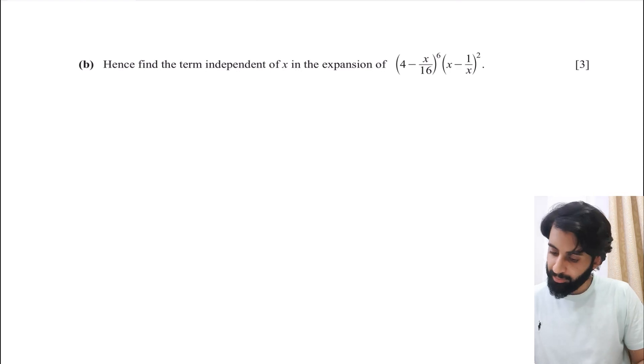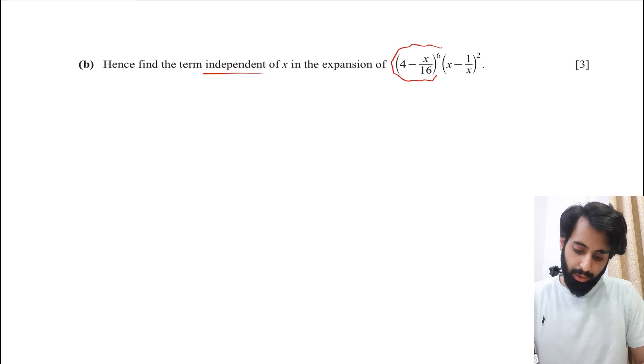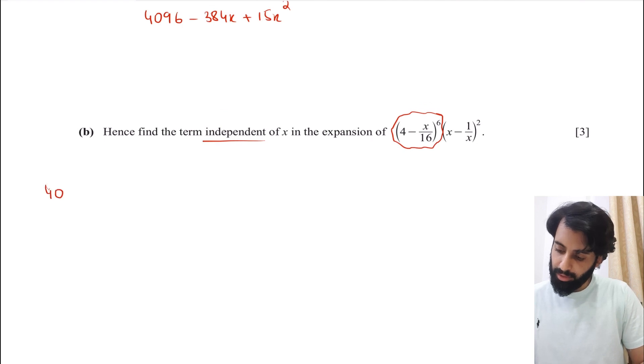All right. Now, this is where it gets interesting. It says, hence, find the term independent of x. Independent of x basically means you're looking for the constant. Okay. So when you're expanding a binomial expression, you're likely to have a constant also, which means it has no x whatsoever. So here, you're not just expanding an expression, you're multiplying it with a certain expression also, and after all that has happened, you want the term that is independent of x. So this, we've already expanded, and we have the first three terms. So I'm going to write that instead, and they are 4096 - 384x + 15x^2.